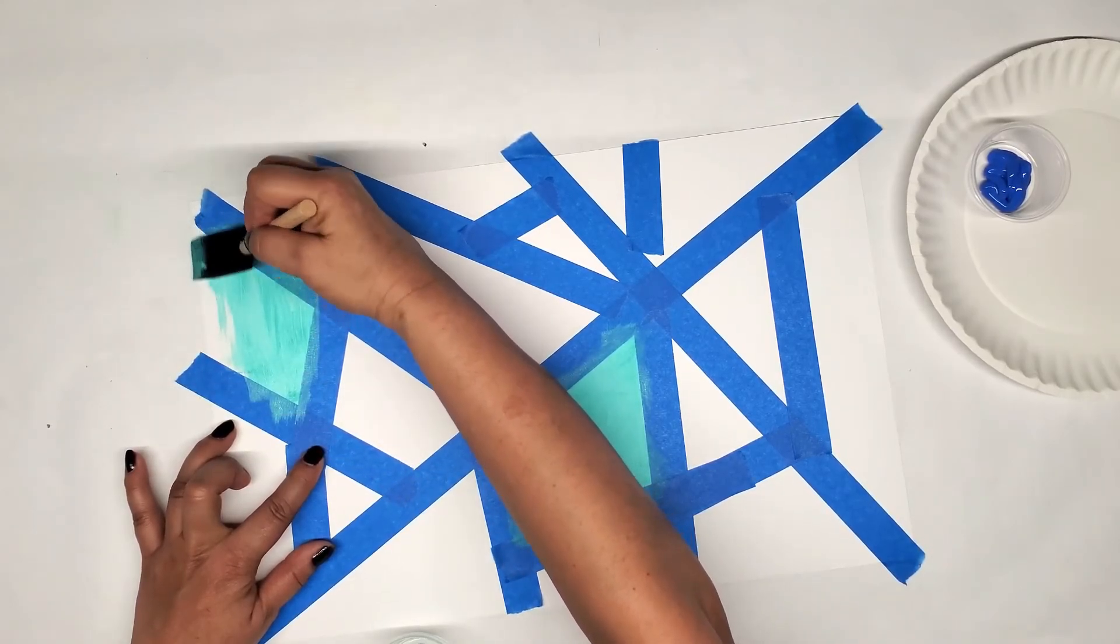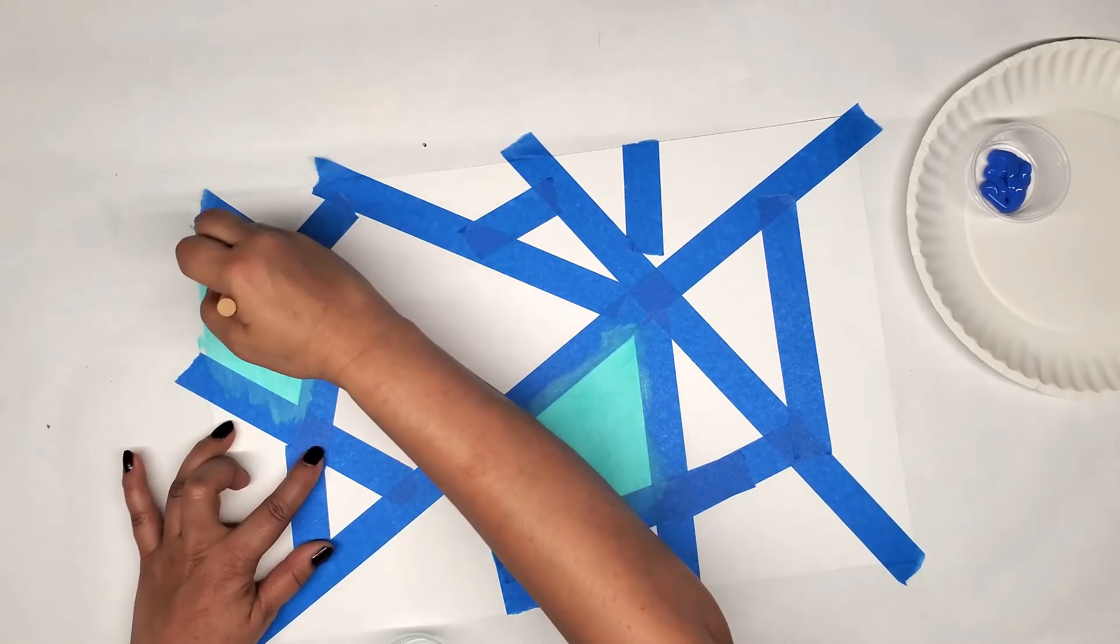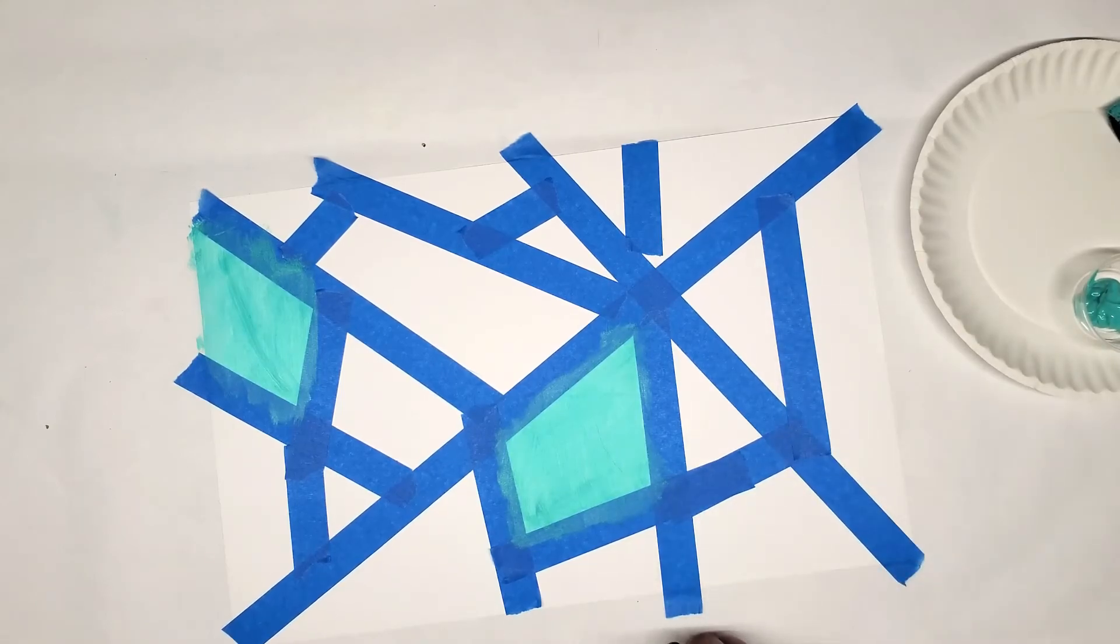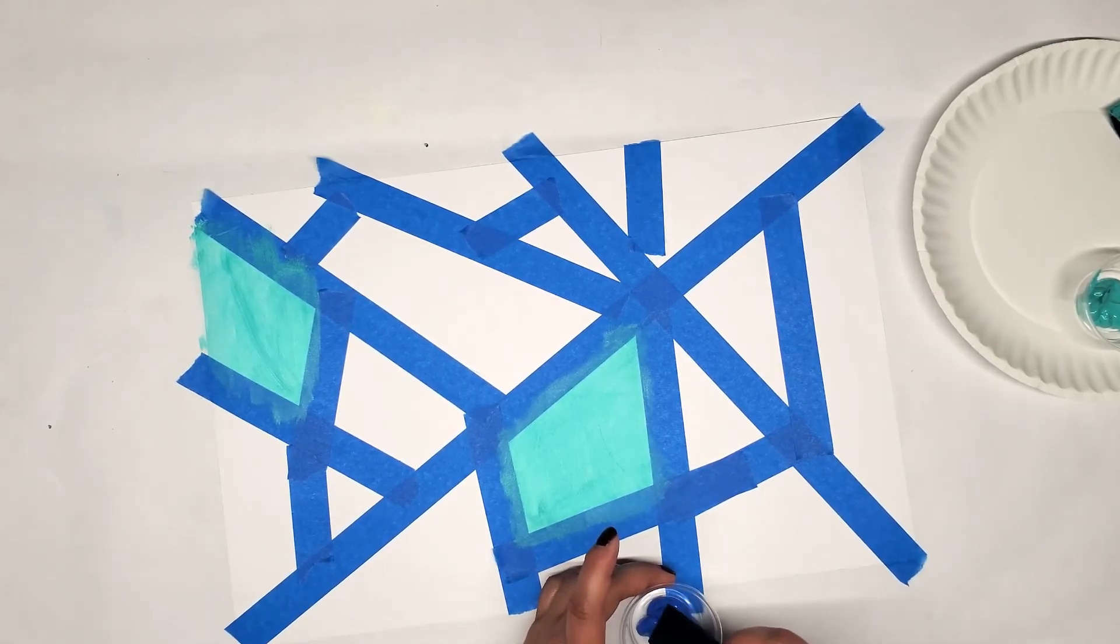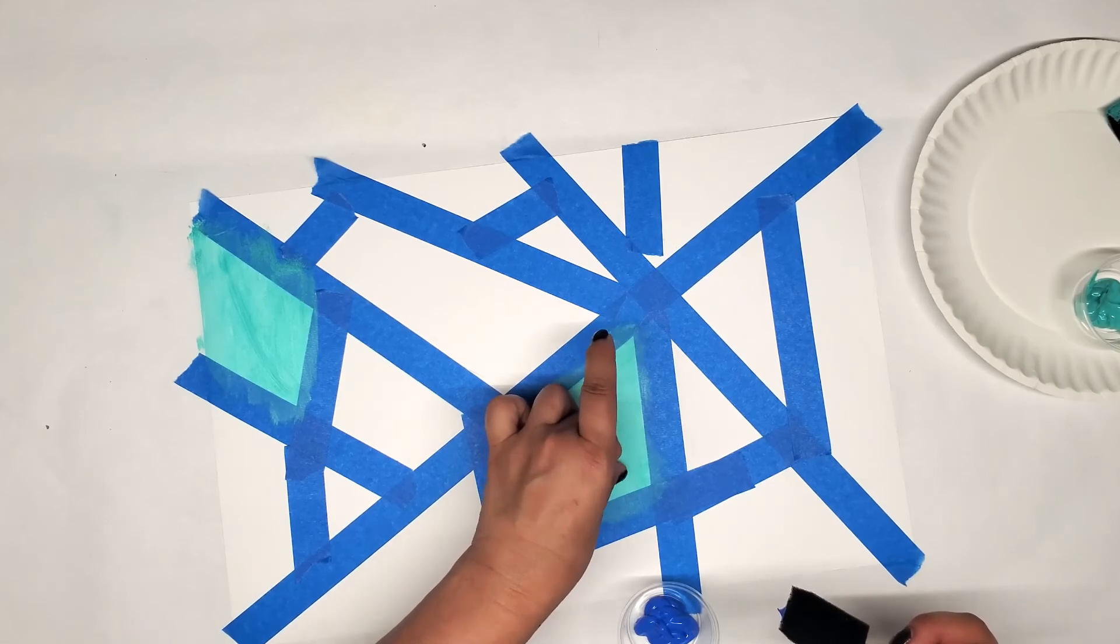If you have another foam brush, I would keep those brushes separate. The colors, I mean, separate. It'll make your life much easier, I promise. If you don't, no big deal. I would just go ahead and do one color, the first color, and then switch to your second color.